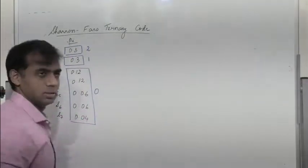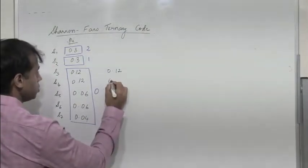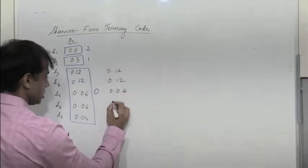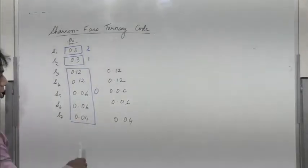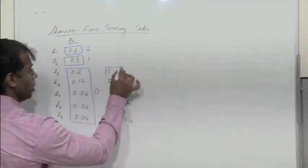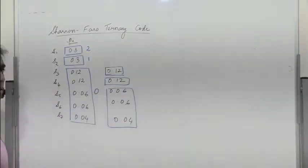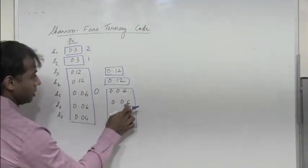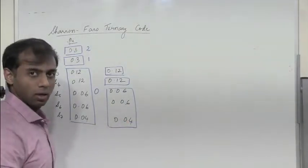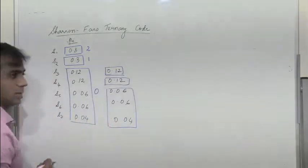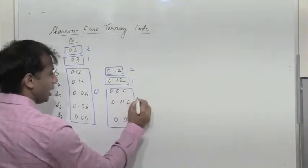The first two groups (S1 and S2) cannot be further divided. So we consider the third group containing probabilities 0.12, 0.12, 0.06, 0.06, and 0.04. This can be further grouped: 0.12 forms one subgroup, 0.12 forms another, and the remaining three (0.06, 0.06, 0.04 = 0.16) form a third subgroup. These are three nearly equal probability groups, assigned 2, 1, and 0 respectively.